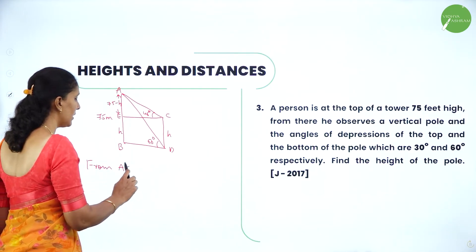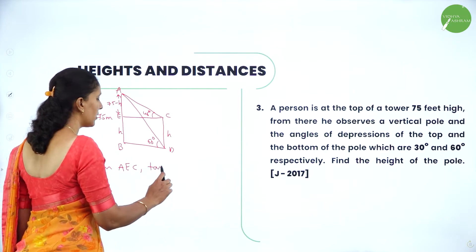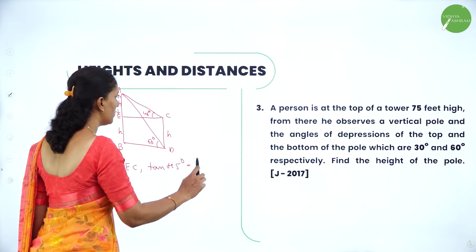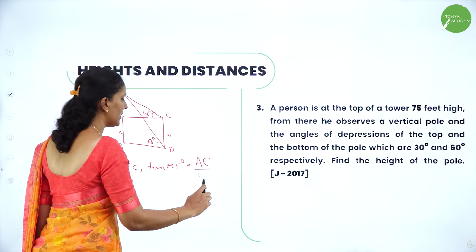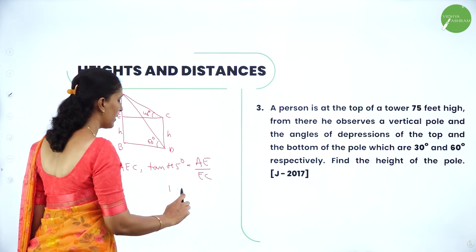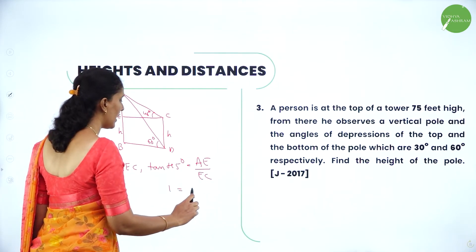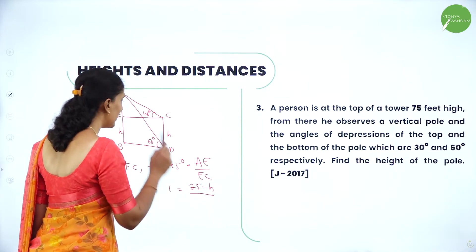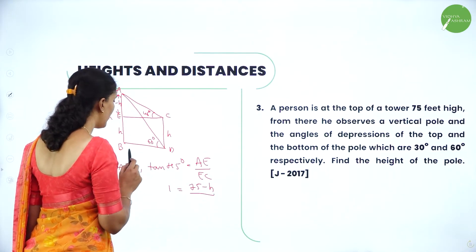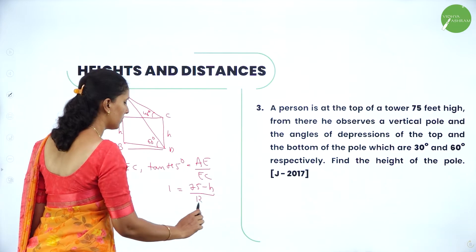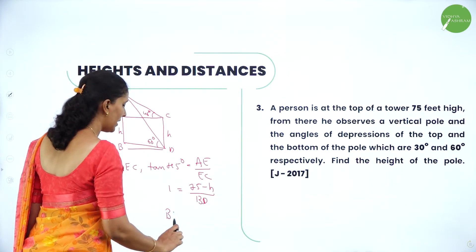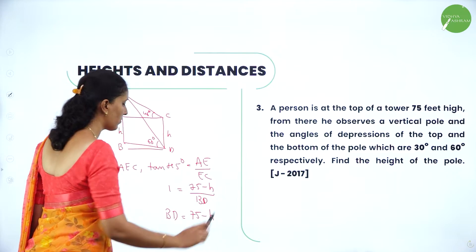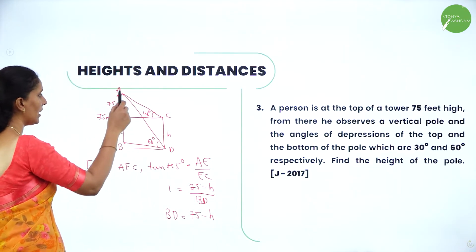From triangle AEC, tan 45° = AE / EC. Tan 45° is 1, and AE is 75 − H. EC can also be taken as BD. So we get BD = 75 − H.